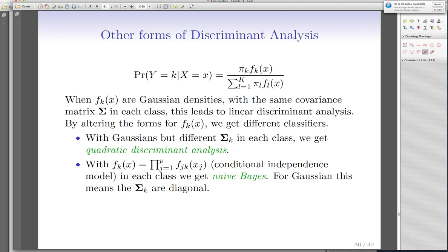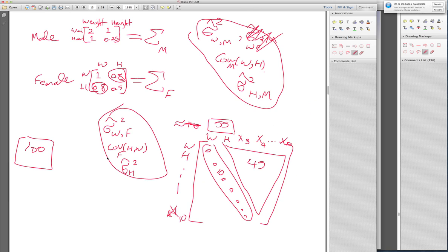In naive Bayes, you assume that the covariance matrix has only diagonal elements, and everything else is zero, so there is no covariance. It's a very strong assumption, but in practice, it has been shown that it's a very good assumption. Because first of all, if you have a lot of attributes, it's impossible to estimate all covariances.